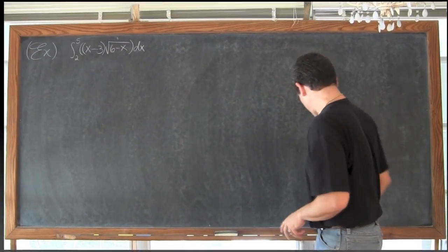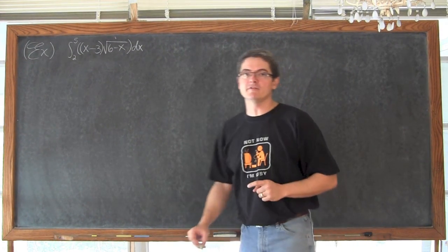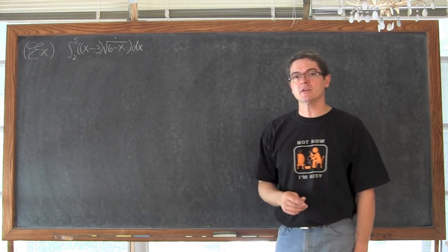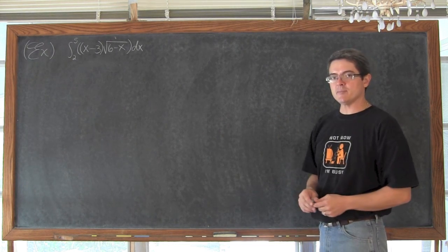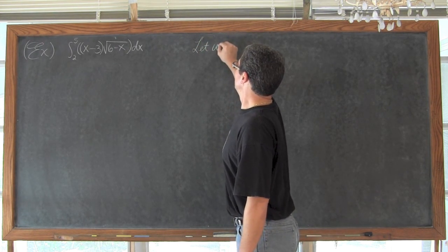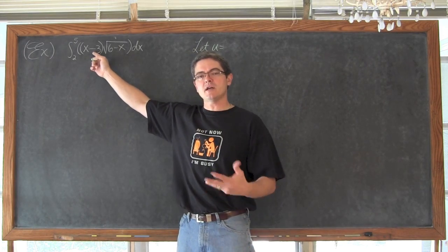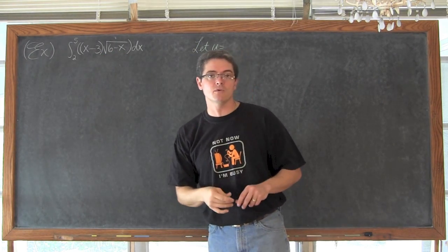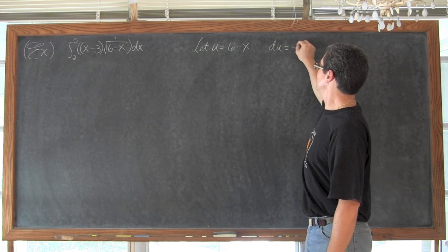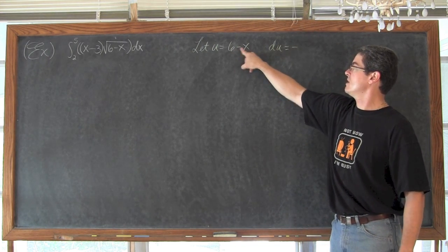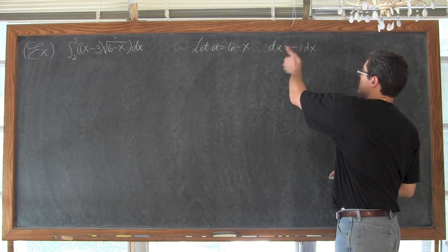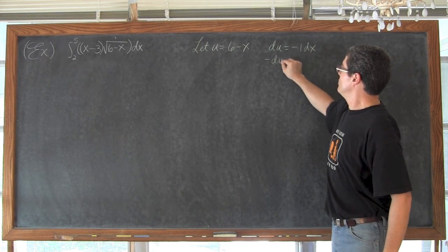Let's take a look at one more example. For our second and last example, we have the definite integral of (x minus 3) times the square root of (6 minus x) dx, with a lower limit of 2 and an upper limit of 5. We have a somewhat complicated definite integral here, so we are going to come off to the side and set up our u substitution. We are going to let u equal 6 minus x, because x minus 3 is not inside a math function the way that 6 minus x is underneath the square root symbol. That gives us du equal to negative 1 dx.